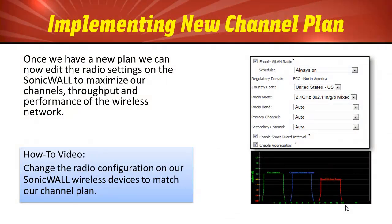Now that we've seen all of our access points and the channels they're overlapping on, the next thing we want to do is create a plan to determine what channels to assign to each radio so they're not interfering with each other. In this next section we're going to reconfigure both a SonicPoint and a SonicWALL wireless firewall to adjust our channels and eliminate overlap. And then finally we'll use inSSIDer again to verify our work.